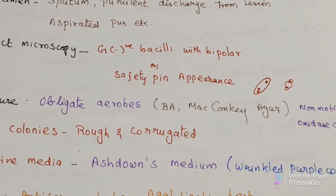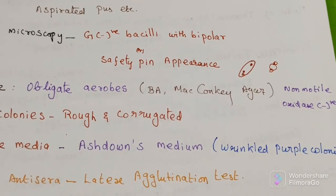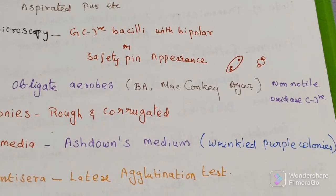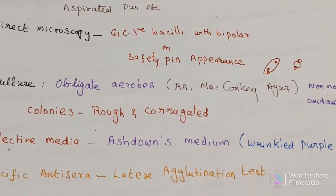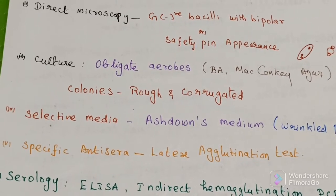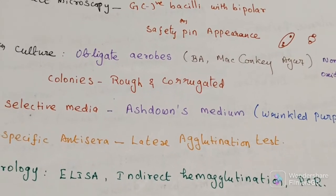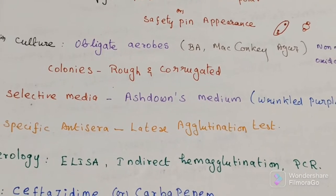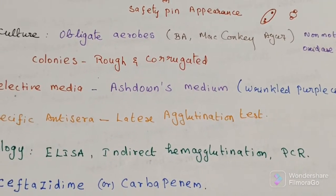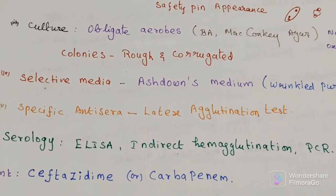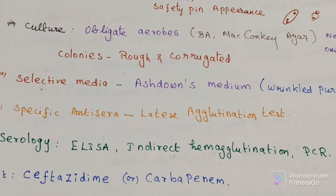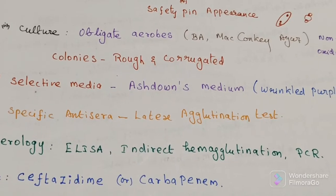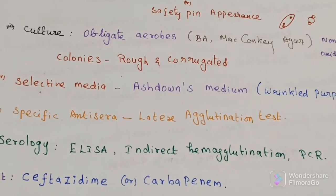On culture, it produces wrinkled purple-colored colonies. The selective medium is Ashdown's medium, on which it also produces wrinkled purple colonies. Further, specific antisera can be used for identification. Serological tests include latex agglutination test, ELISA, indirect hemagglutination, and PCR. For treatment, ceftazidime or carbapenem are used as the two drugs of choice.